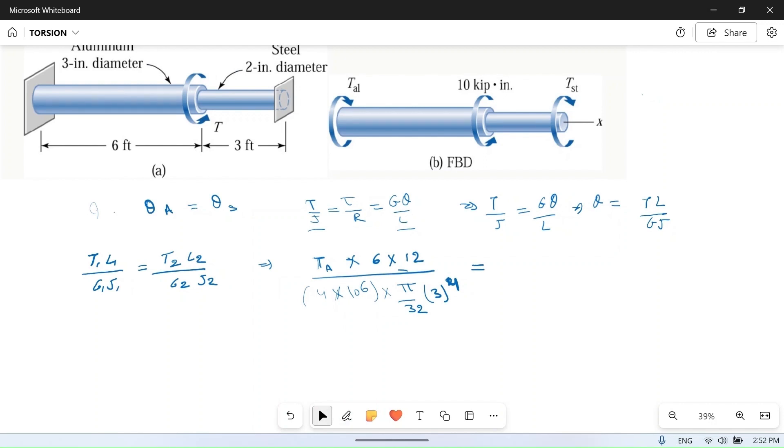T_steel × L (which is 3 feet = 3×12 inches) / [G = 12×10^6 psi × J = π/32 × d^4 where d = 2 inches, so 2^4].